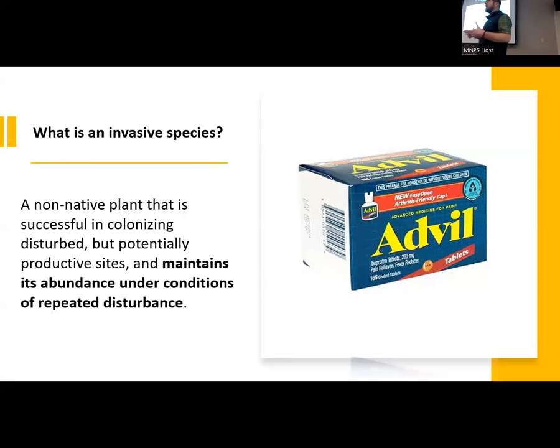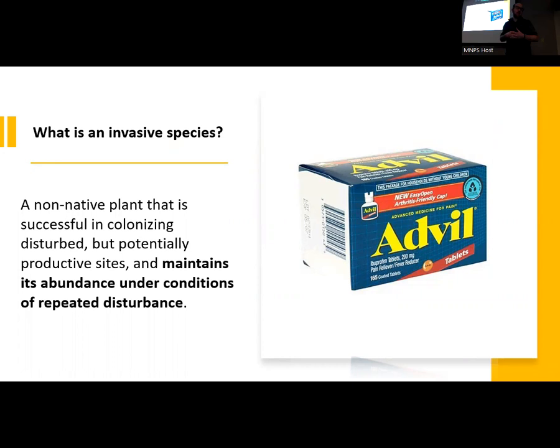If you think about the tools we use, like herbicide, they in and of themselves are a disturbance in that plant community. So we're creating disturbance. And if we go back to the definition of invasive species, these are species that are successful in colonizing disturbed sites and can maintain their abundance under conditions of particular disturbance. So we're basically setting ourselves up into a perfect scenario for these species to be successful over the long term.